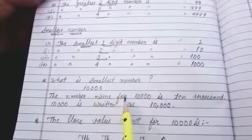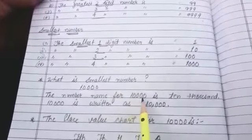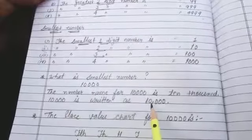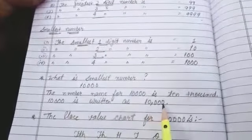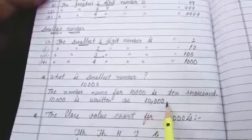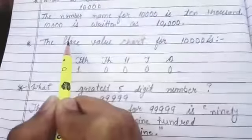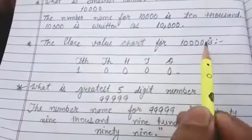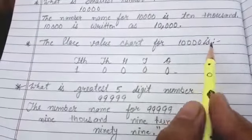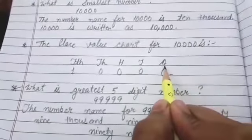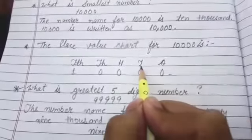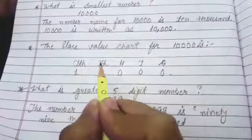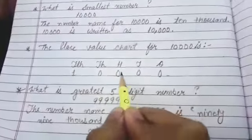The number name for 10,000 is ten thousand. 10,000 is written as 10,000. The place value chart for 10,000 is how we will write 10,000 in place value chart. First of all we will write ones then tens then hundreds then thousands then 10,000 then 1.